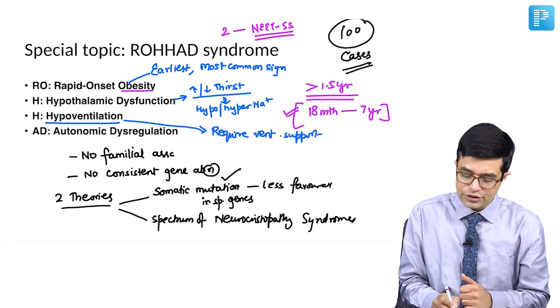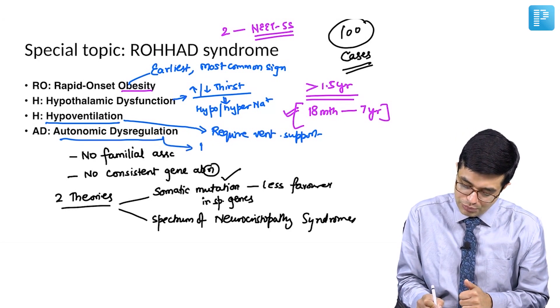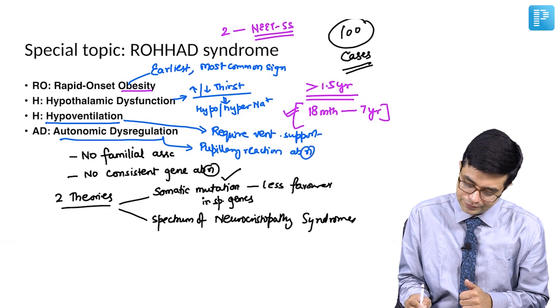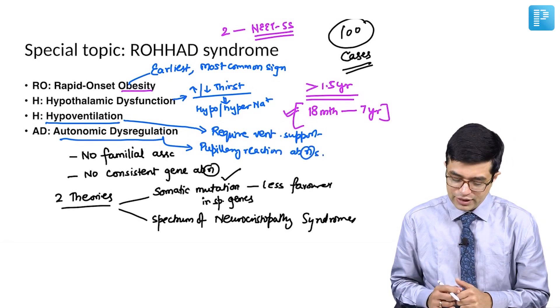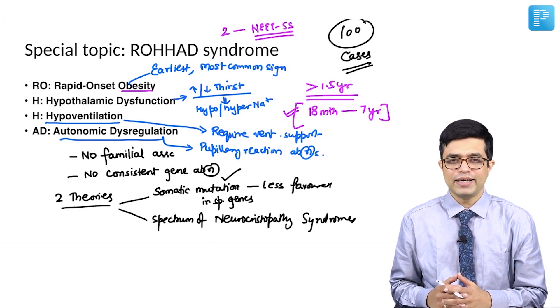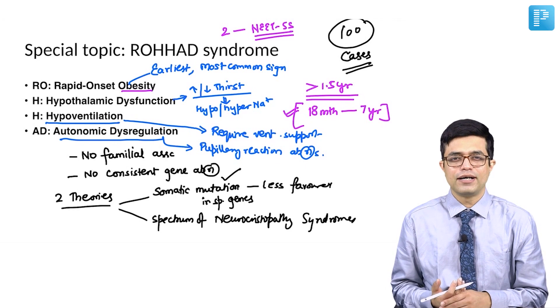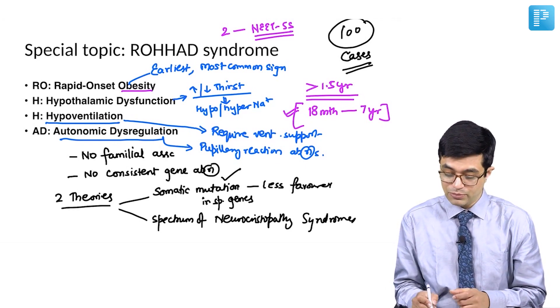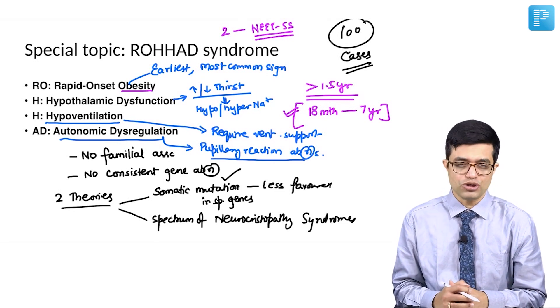Fourth is your autonomic dysregulation in which pupillary reaction abnormalities are the most common. Other than pupillary reaction abnormalities, the usual features like sweating and tachycardia and bradycardia may sometimes rarely be seen, but it is mostly the pupillary reaction abnormalities which have been described in the literature.